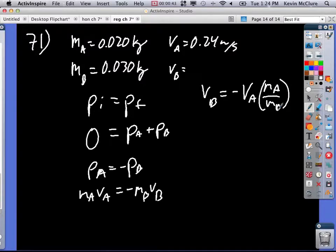And when you look at it, A over B is two-thirds, so it's going to be two-thirds of that, something like negative 0.16 meters per second.